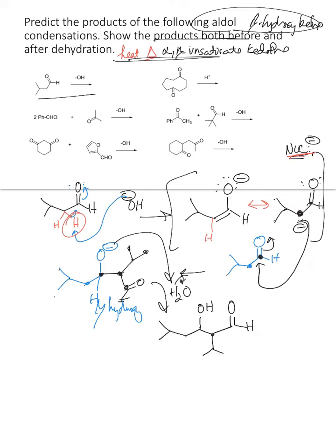Count your carbons — one two three four five six seven eight nine ten — and then it gets protonated by water to regenerate your beta hydroxy ketone or aldehyde in this case. With heat, this alpha proton will get deprotonated and the OH leaves to give you an alpha beta unsaturated ketone. Count your carbons: one two three four five six seven eight nine ten.